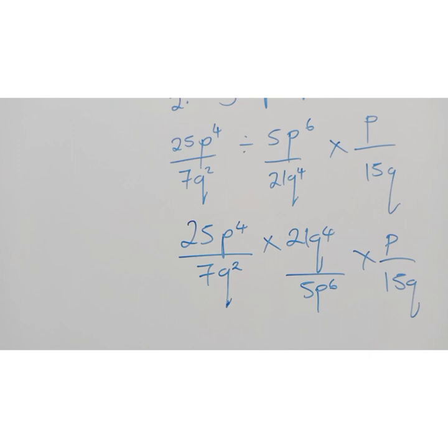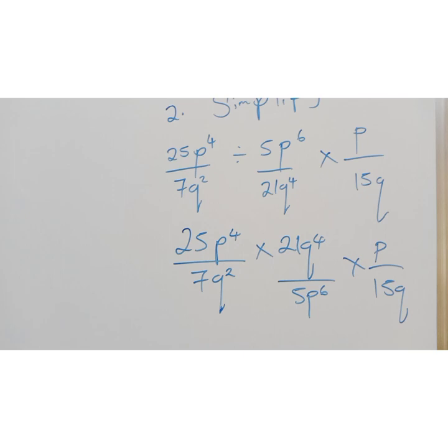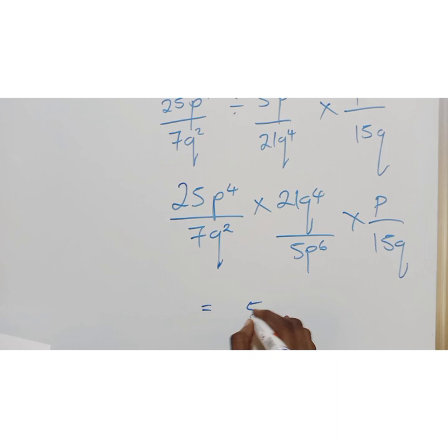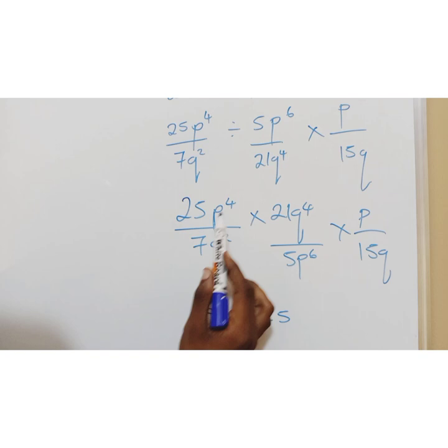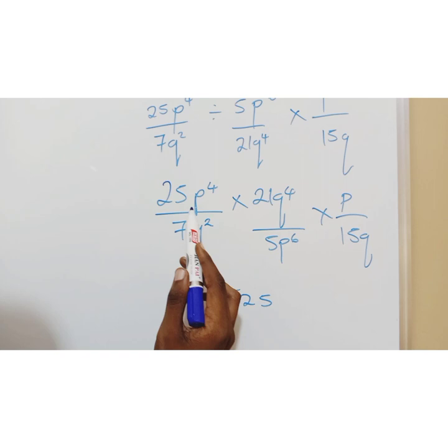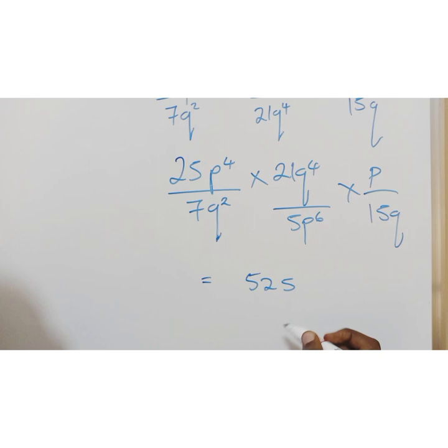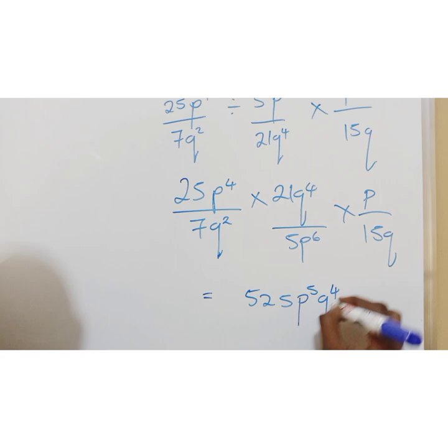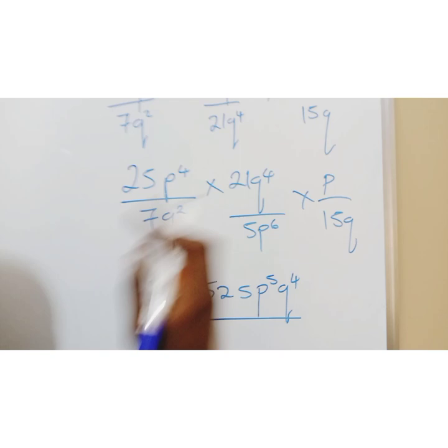Once we have that now, it's about multiplying. I'll multiply the numbers 25 times 21 to give me 525. Now I start multiplying letters. So this is p to the power 4 times p. So if you're multiplying variables like powers, you're multiplying powers, you add. So this is 4. Here there's 1. So 4 plus 1 is 5. So you have p to the power 5. Then you have q to the power 4.